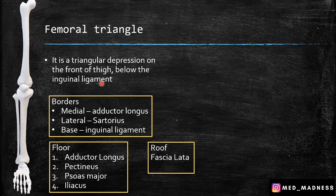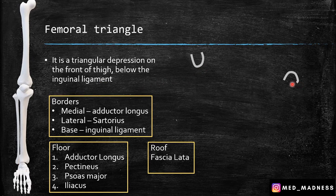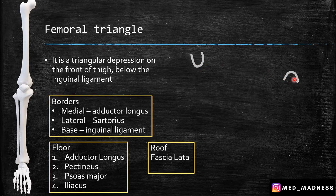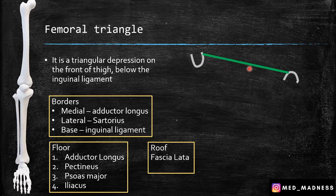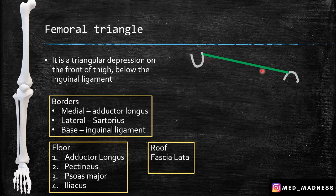I am going to construct the triangle step-by-step. These are the important bony landmarks in the pelvis. This is the anterior superior iliac spine and this is the pubic tubercle — I have taken the right side. The inguinal ligament extends from the anterior superior iliac spine to the pubic tubercle and forms the base of the femoral triangle.